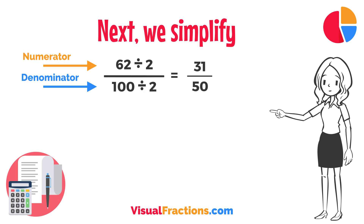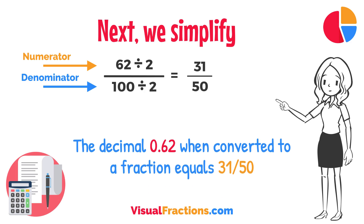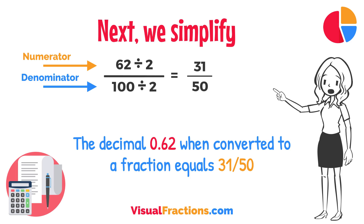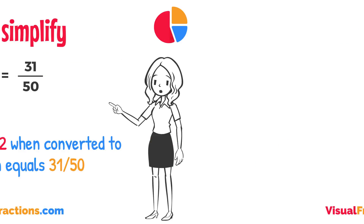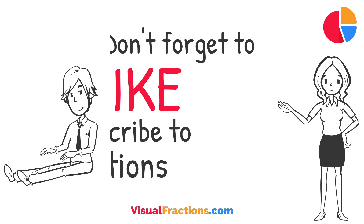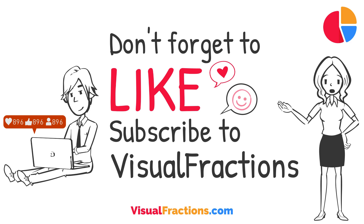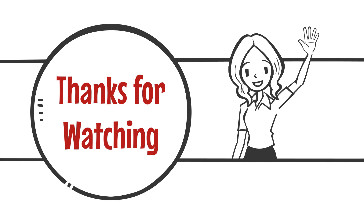And there you have it. The decimal 0.62, when converted to a fraction, equals 31 fiftieths. This fraction is in its simplest form and cannot be further simplified. If you found this tutorial helpful, remember to smash that like button and subscribe to Visual Fractions for more practical math insights. Thanks for watching.